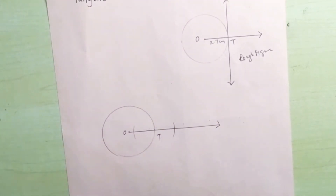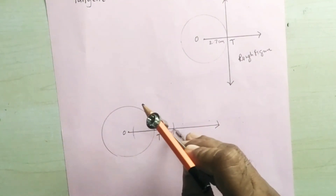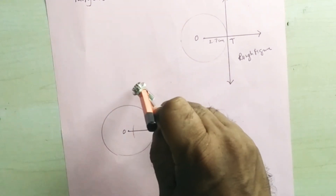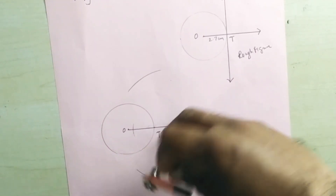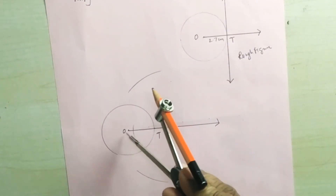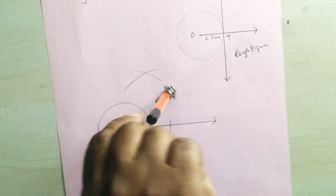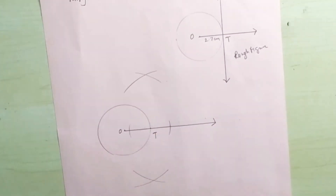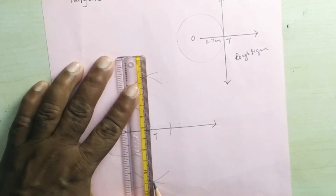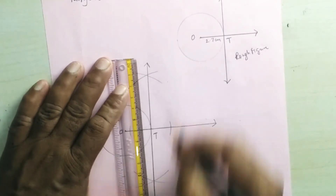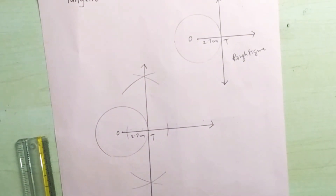Now take more than half the distance between these two arcs, keep the pointer at one of the arcs cutting the ray, and draw one arc above and one below the ray OT. Then keep the pointer at the other arc cutting ray OT and cut the arc above and below. Now draw the tangent which will pass through point T. This is how we draw the tangent for a circle of radius 2.7 centimeters.